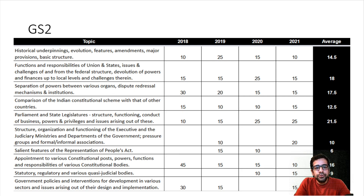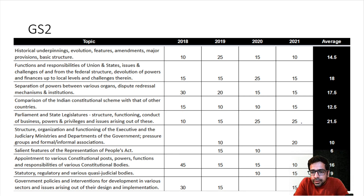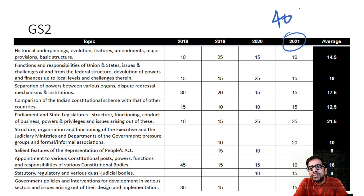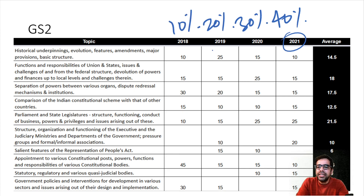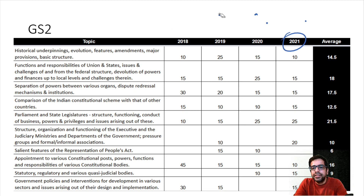Let's come to GS2. For GS2, I have provided a weighted average here - weighted average means 2021 has 40% weight, 2020 has 30%, then 20%, and 10%. So in weighted averages compared to GS2 overall average, we can take this as an indicator of trends.